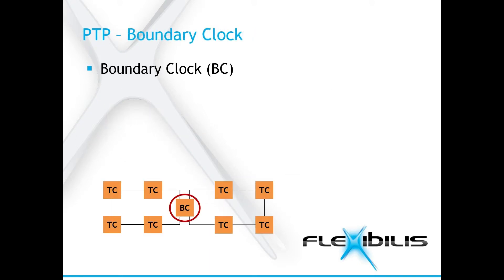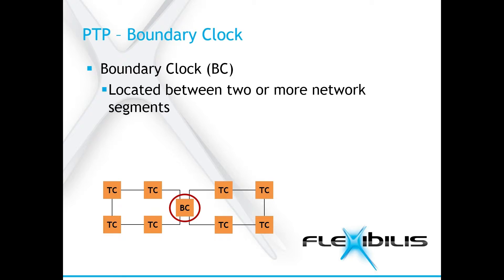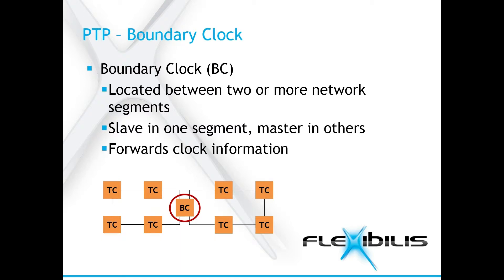A boundary clock is a clock that is located between two or more network segments. A boundary clock acts as a slave clock in one of the network segments and as a master in the other segments. Boundary clocks forward the clock information from one network segment to another. A boundary clock must be used if the PTP operating mode changes, for example from end-to-end to peer-to-peer. In other words, a BC must be used if one part of the network is peer-to-peer and another is end-to-end.